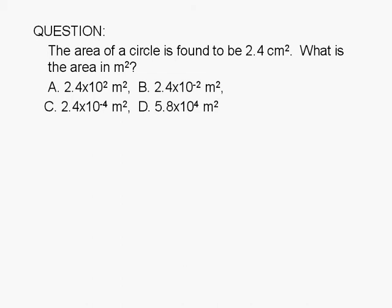The area of a circle is found to be 2.4 centimeters squared. What is the area in meters squared? The choices are: A. 2.4 times 10 to the second meters squared, B. 2.4 times 10 to the negative 2 meters squared, C. 2.4 times 10 to the negative 4 meters squared, or D. 5.8 times 10 to the 4 meters squared.